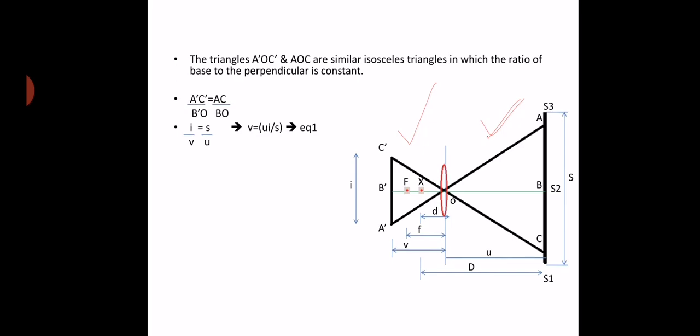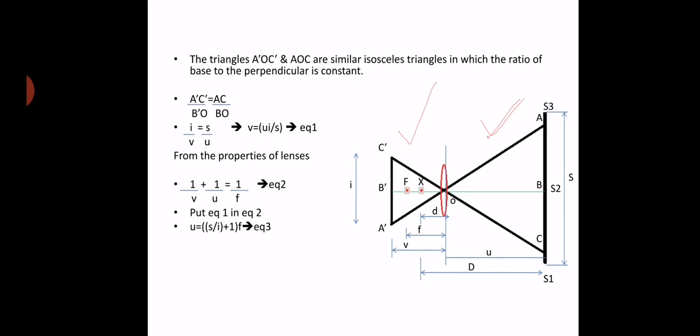From the properties of lenses we know that 1/V + 1/U = 1/f — let this be equation number 2. Substituting equation 1 into equation 2 and solving, we get U = (S/i + 1) × f. Let this be equation number 3. From the figure we also know that D = U + d, so U = D − d. Let this be equation number 4.